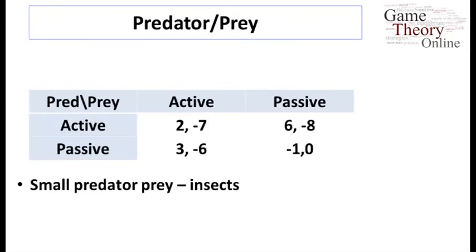Now let's look at a quick variation: instead of large mammals, we think of small insects. Here are the payoffs from the same paper, readjusted for small predator-prey insect games. If the predator expects the prey to be active, they prefer to be passive — active prey in an insect game are hard to catch, so it's better not to expend too many calories. If the predator is passive, the prey gets minus six if active and zero if passive — since the predator is passive, the prey might as well be passive too and not burn as many calories.